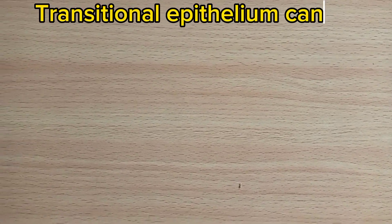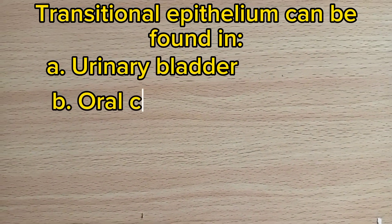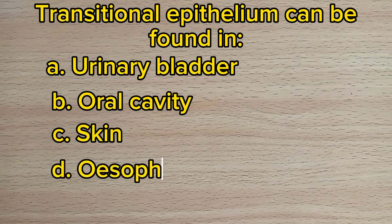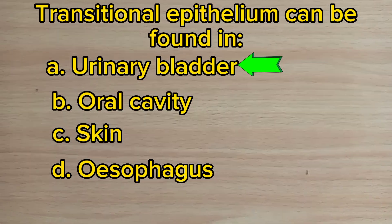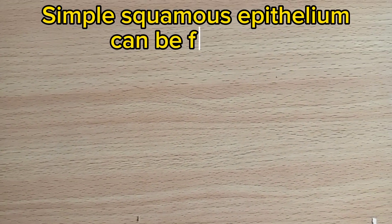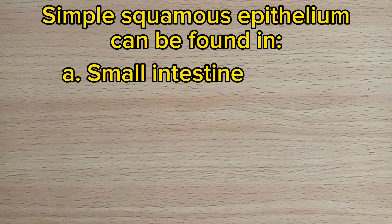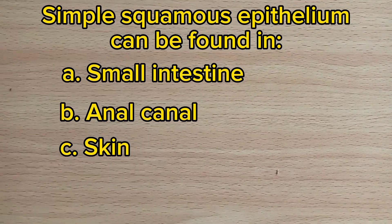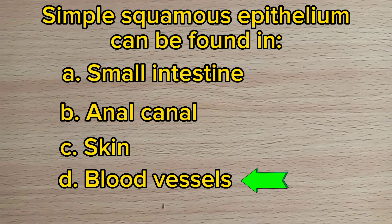Number 11. Transitional epithelium can be found in: A. Urinary bladder. B. Oral cavity. C. Skin. D. Blood vessels. Answer: D. Blood vessels.